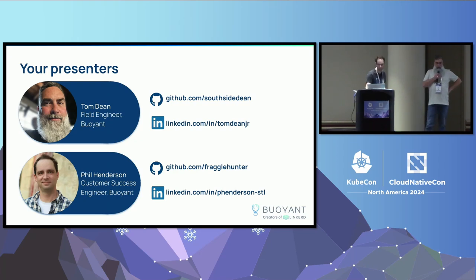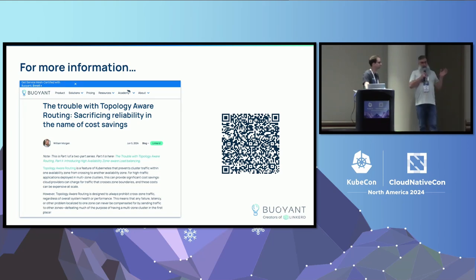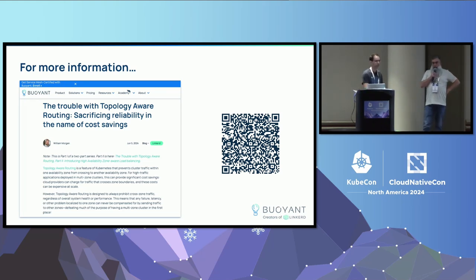Today we're here to talk about cross-AZ traffic — really focus on the impact of that and how you can leverage topology-aware routing to avoid it, and how you can use a Service Mesh to keep an eye on what topology-aware routing does. This is based on a blog post I worked on with William, our CEO. You can scan a QR code or go to buoyant.io and look in the blog section — it's a couple months back and shouldn't be hard to find.